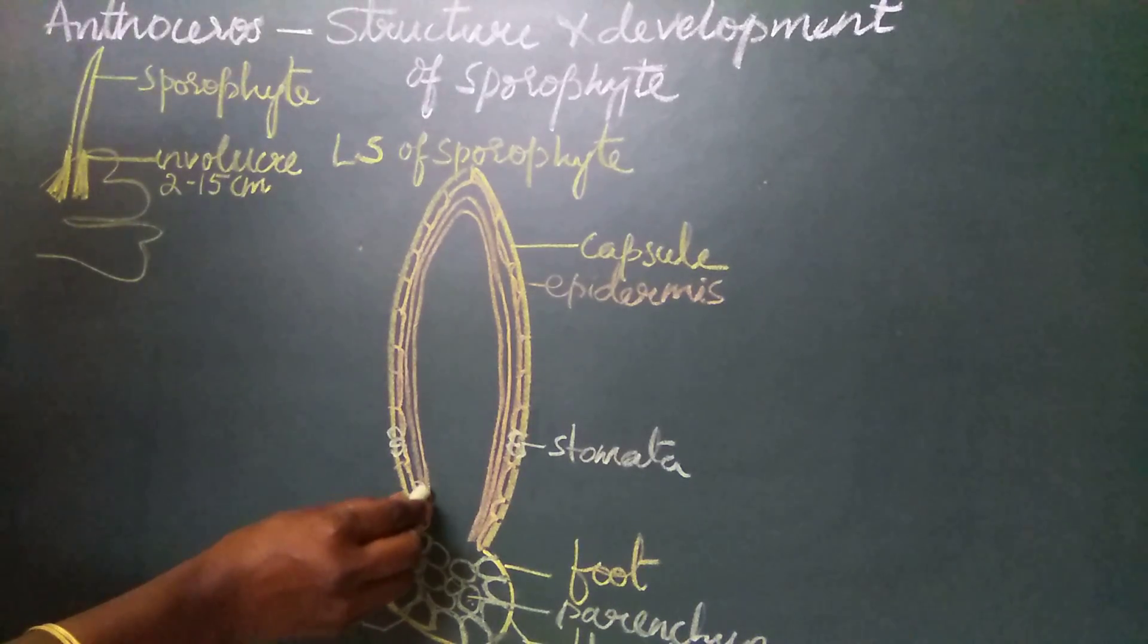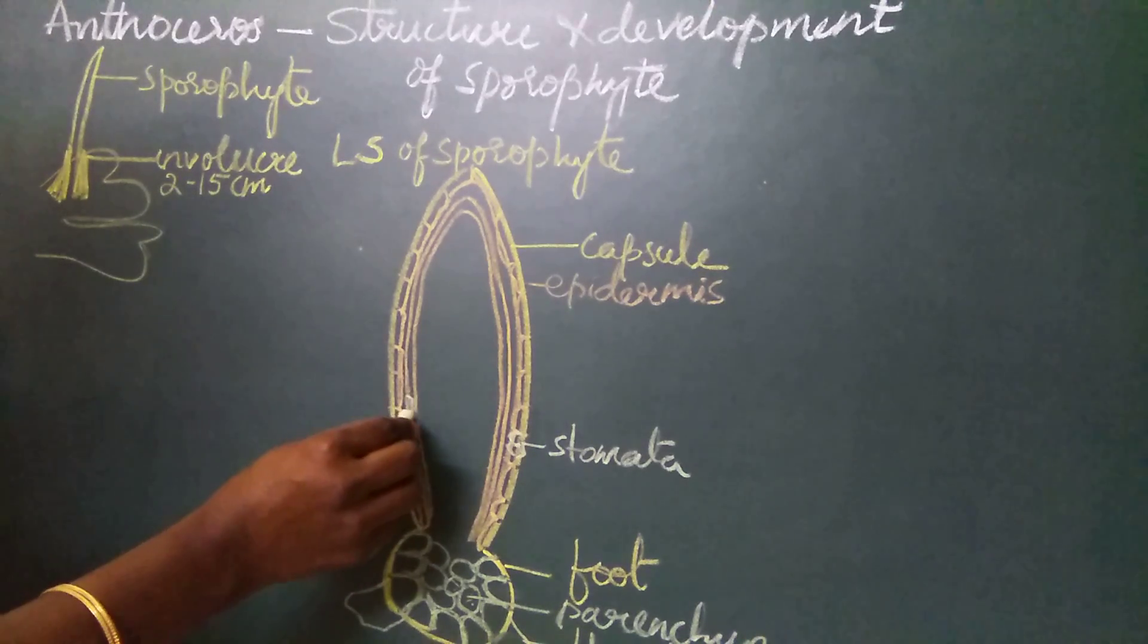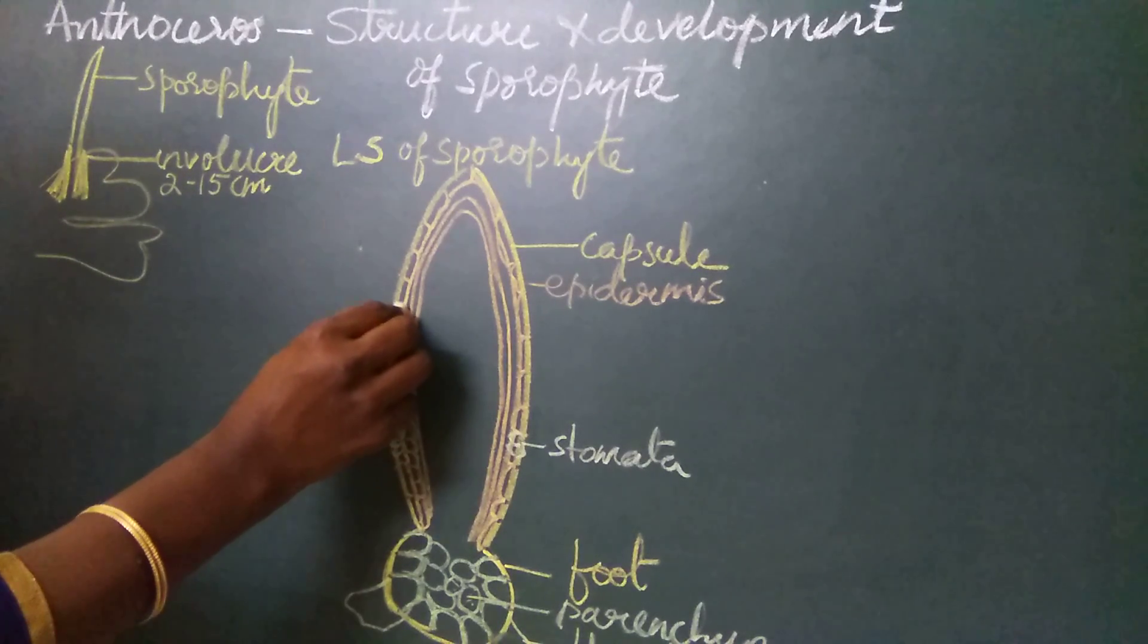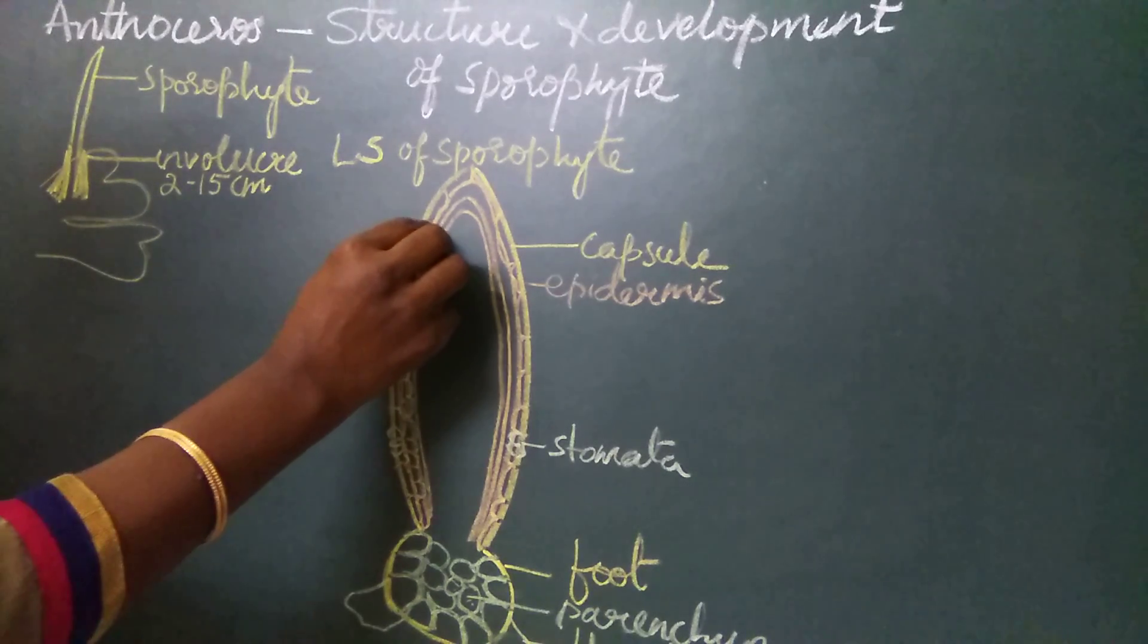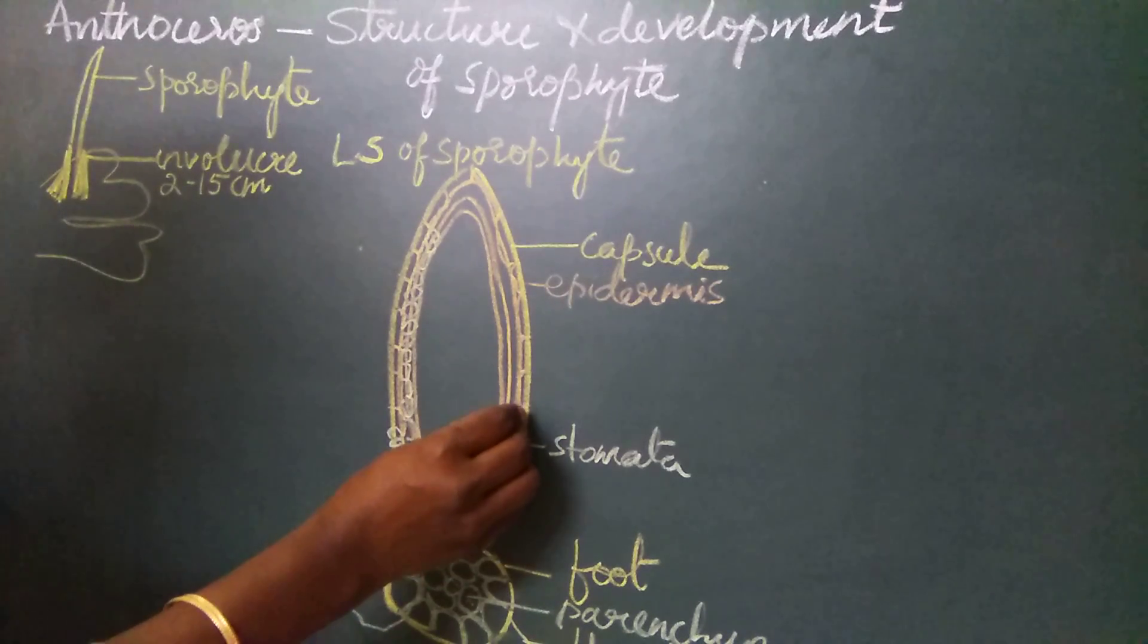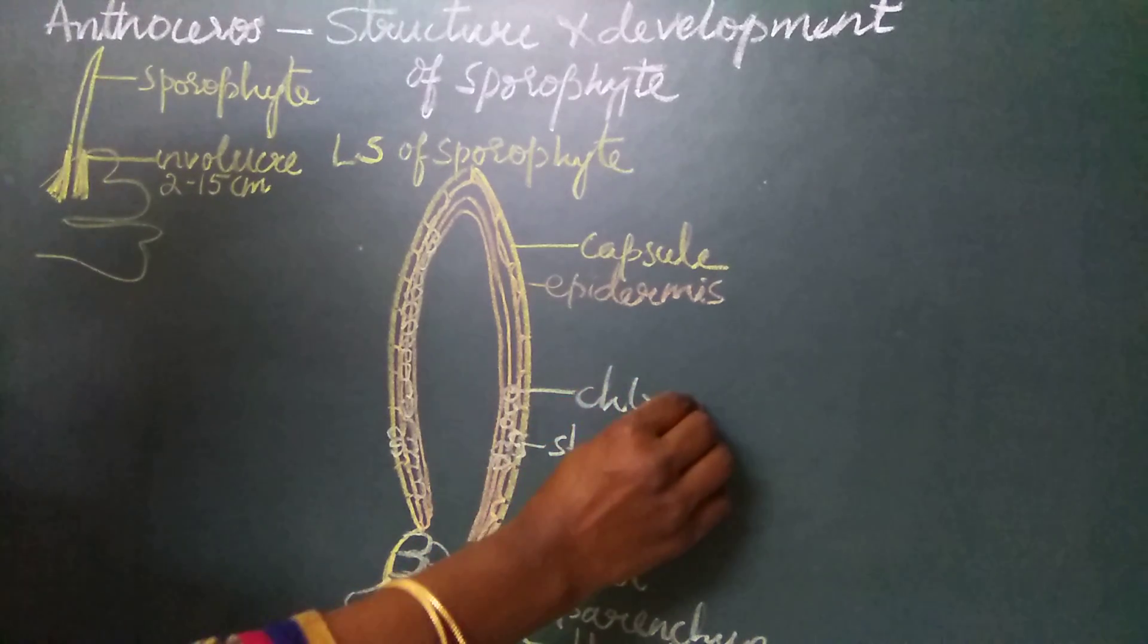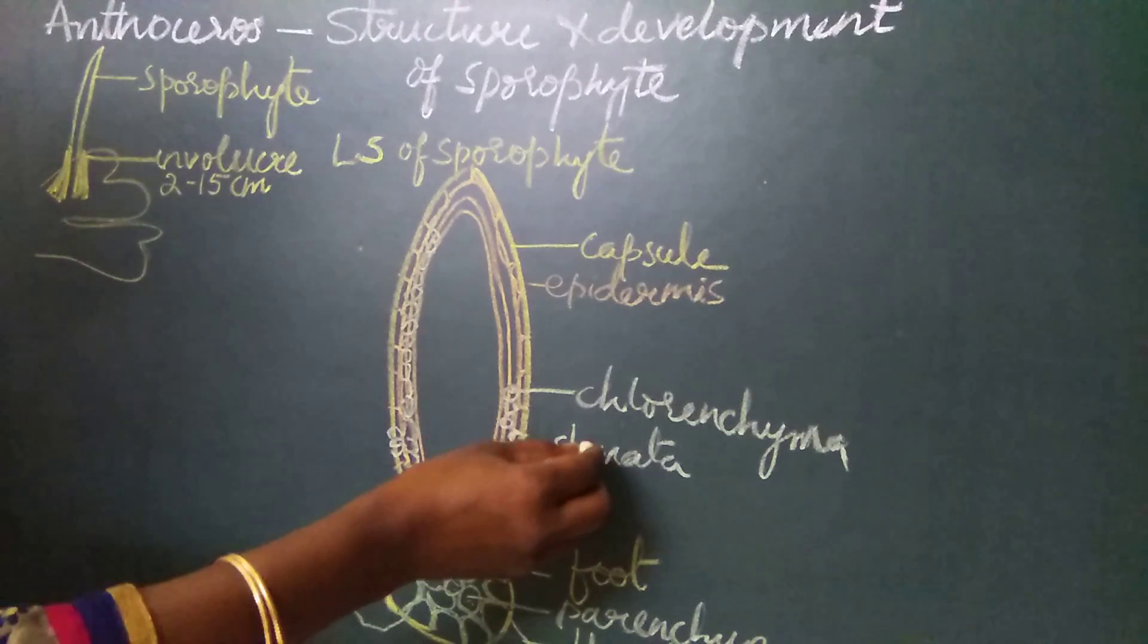The remaining layers are made up of parenchyma cells which contain chloroplasts. Interior to the epidermis, we find two to three layers of parenchyma cells which contain chloroplasts. These cells help in photosynthesis. Stomata helps in the exchange of gases, and the chloroplast tissue helps in assimilation.